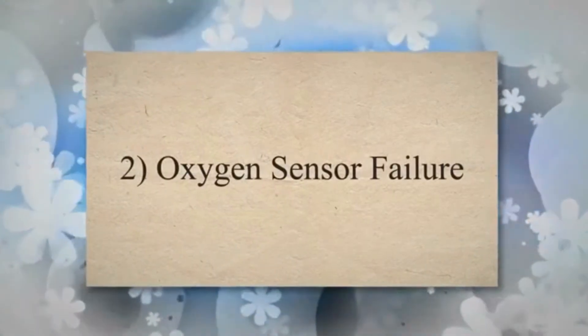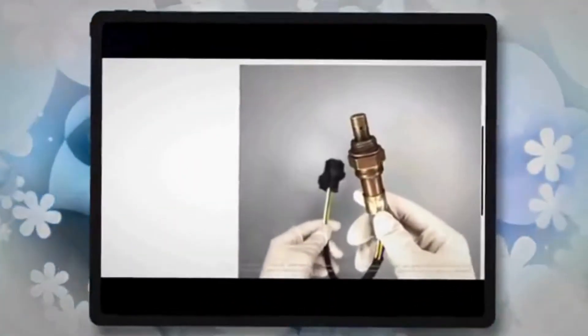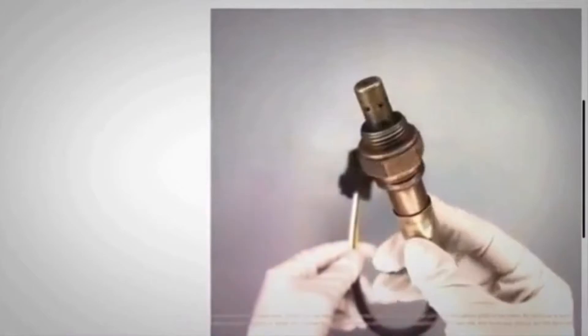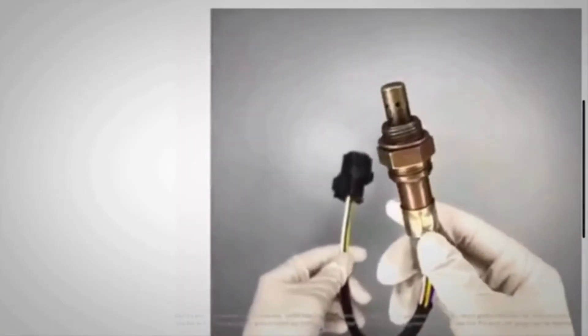2. Oxygen Sensor Failure. The oxygen sensors in the exhaust system monitor the air-fuel mixture and the efficiency of the catalytic converter. If the downstream oxygen sensor in Bank 2 is faulty, it can send incorrect data to the engine control module and trigger a P0430 code.